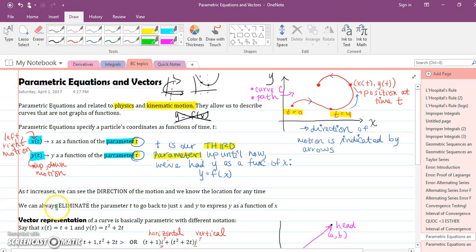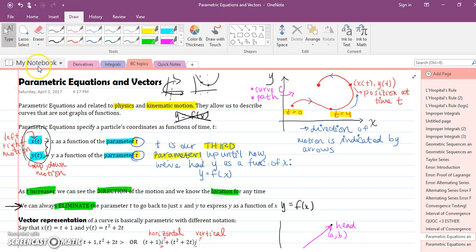Again, as time increases, we see the direction of the motion and we know the location for any time. Just keep in mind, you can always eliminate the parameter T and go back to Y equals F of X. Or you can start with Y equals F of X and go to parametric notation. You need to be able to do this one. You don't need to go from Y equals F of X back to parameters, but you do need to go from parameters back to Y equals F of X. So I'll show you how to do all that stuff in these videos.